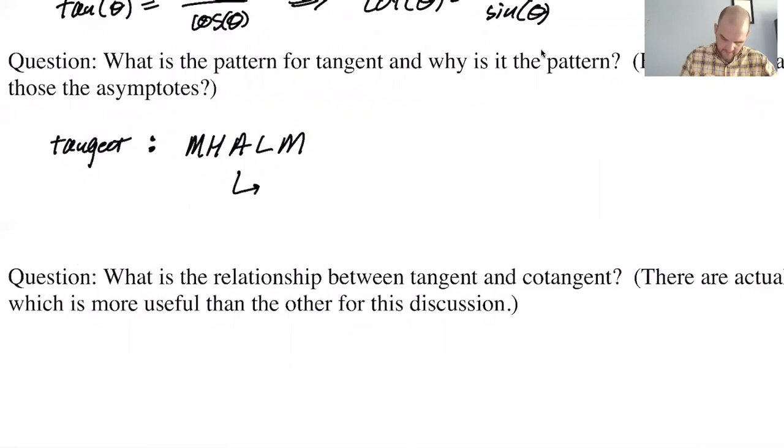The asymptote is because cosine, you're trying to divide by zero. Cosine of theta equals zero. Therefore, tangent of theta is undefined, doesn't exist.